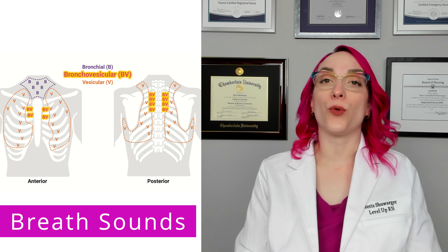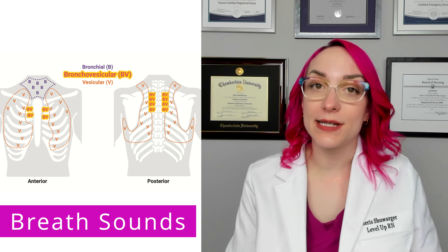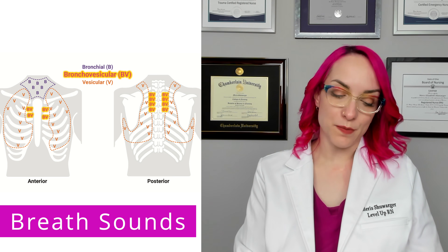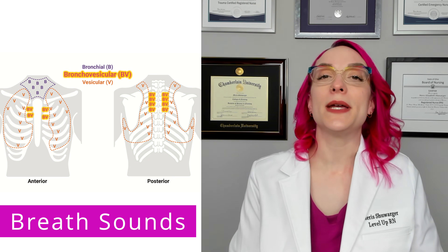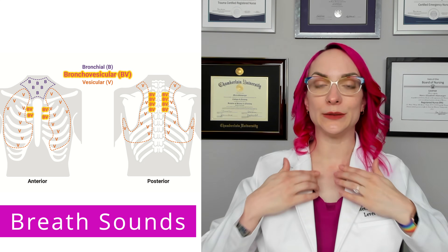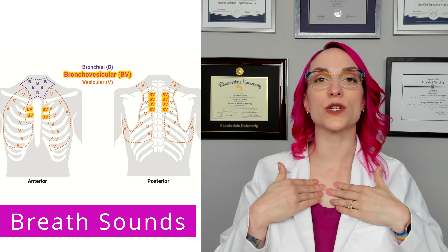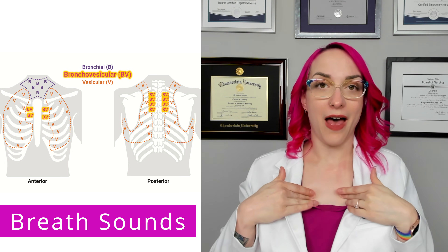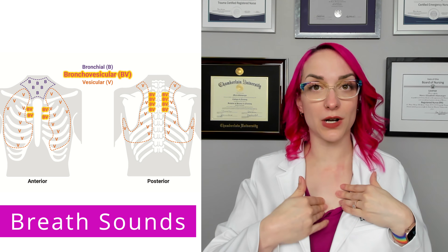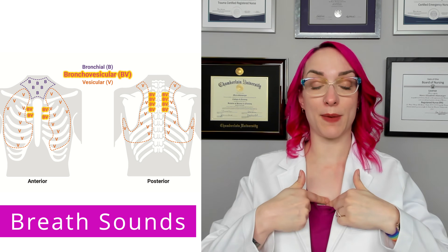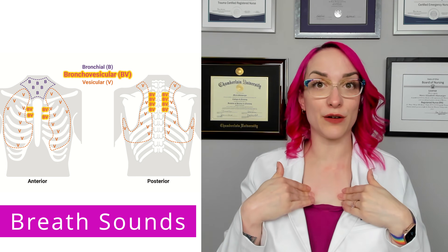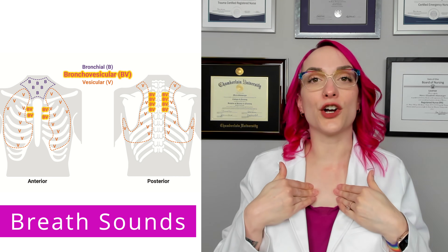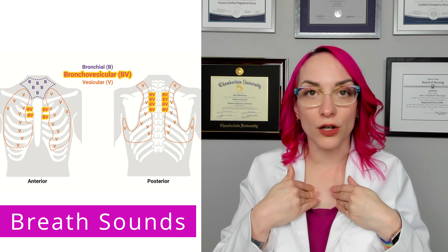Then I have bronchovesicular sounds. These are going to be medium volume and pitch, and these are going to be auscultated over the bronchi. So if I were to place my stethoscope immediately to either side of the sternum, right where I would expect my bronchi to split from the trachea, I would expect to hear bronchovesicular sounds.